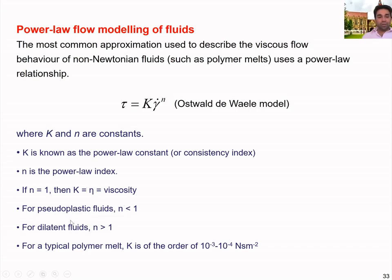For pseudo-plastic fluids, where the fluid becomes thinner with increasing shear rate, n is less than 1. For dilatant fluids, where viscosity increases with shear rate, n is greater than 1. For typical polymers, the k value or consistency index can be on the order of 10 to the minus 3. This gives a rough idea of the power law model used to model viscous flow behaviour of non-Newtonian fluids.